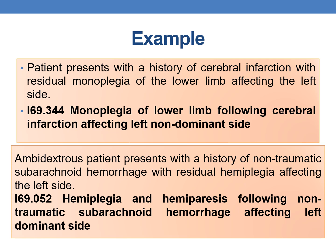Let us see a couple more examples. A patient presents with a history of non-traumatic intracerebral infarction with residual monoplegia of the lower limb affecting the left side. Left side means non-dominant; the appropriate code is I69.344 — monoplegia of lower limb following cerebral infarction affecting left non-dominant side. Now for an ambidextrous patient who presents with residual hemiplegia affecting the left side: generally left side means non-dominant, but for an ambidextrous patient, whether right or left side is affected, by default you code dominant. The appropriate code is I69.052 — hemiplegia and hemiparesis following non-traumatic subarachnoid hemorrhage affecting left dominant side.